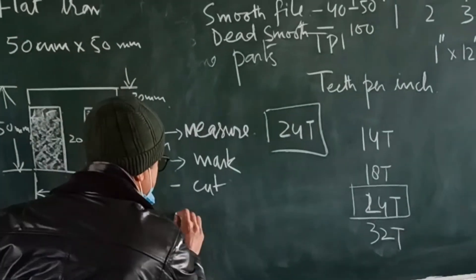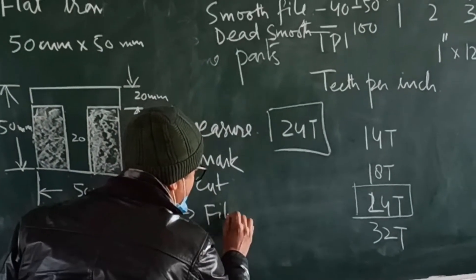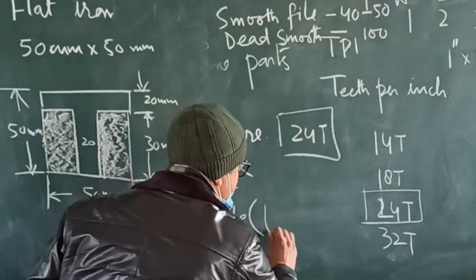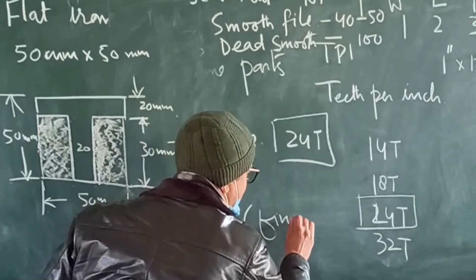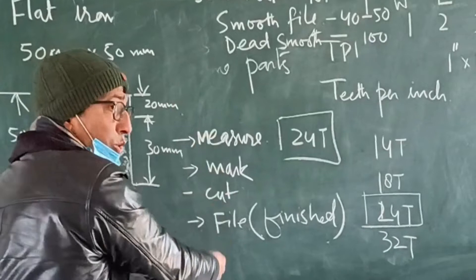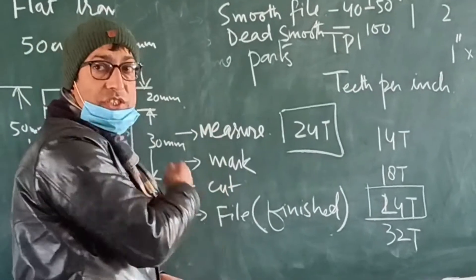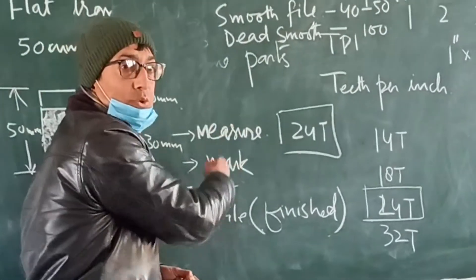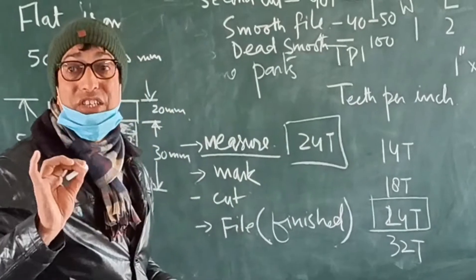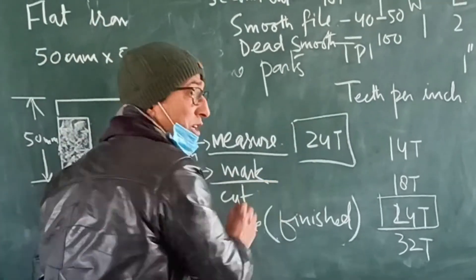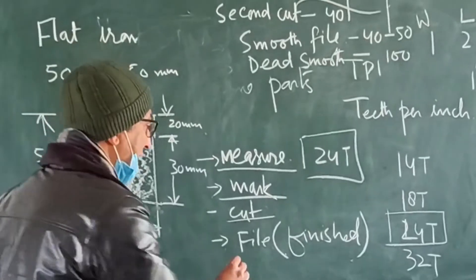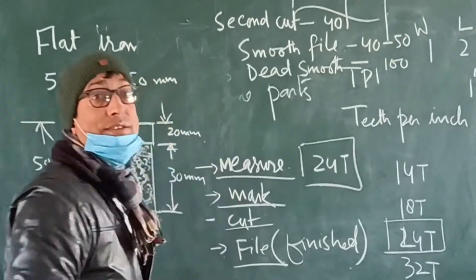After cutting, you file to get it finished. So these are the four operations you are going to do: first you measure, then how to mark, then how to cut, and the last one is file.